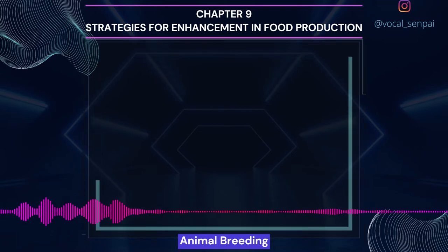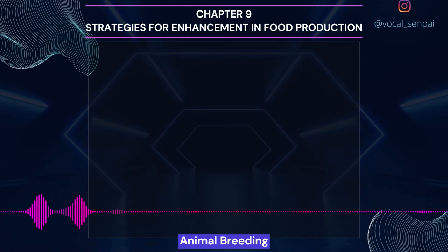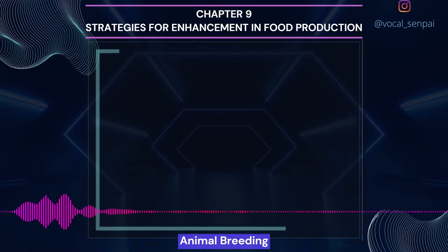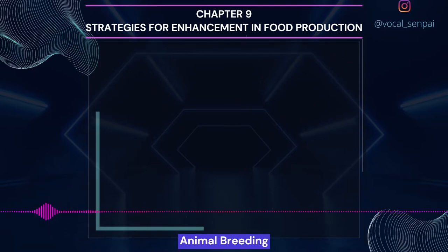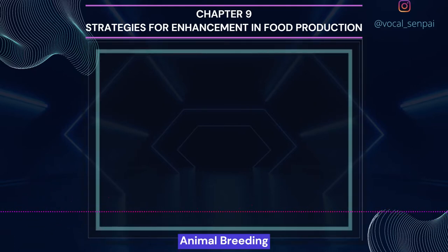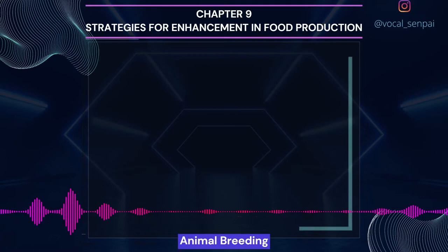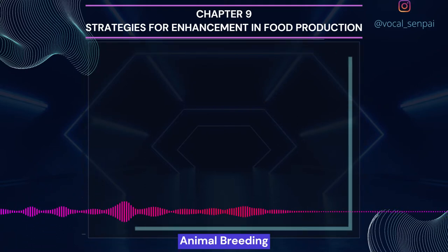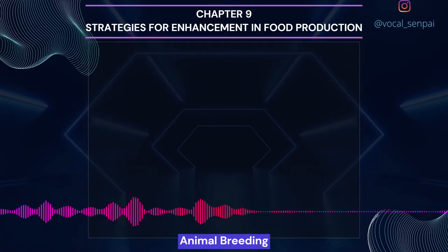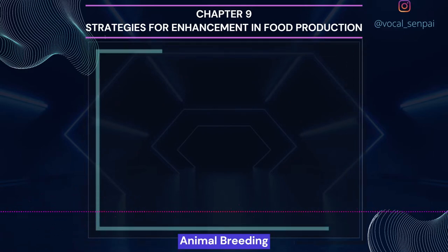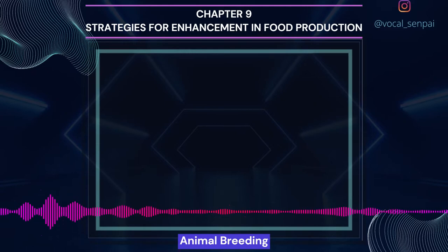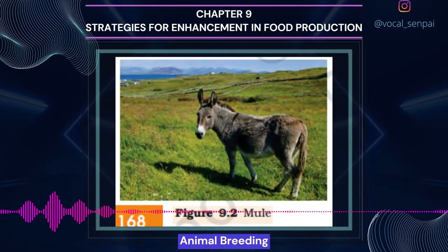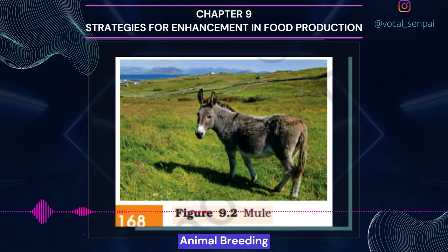Outbreeding is the breeding of unrelated animals, which may be between individuals of the same breed but having no common ancestors for 4-6 generations (outcrossing), or between different breeds (crossbreeding), or different species (interspecific hybridization). Outcrossing is the practice of mating of animals within the same breed but having no common ancestors on either side of their pedigree up to 4-6 generations. The offspring of such a mating is known as an outcross. It is the best breeding method for animals that are below average in productivity. A single outcross often helps to overcome inbreeding depression.